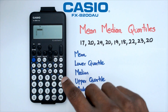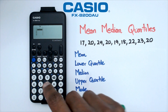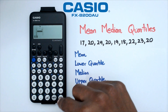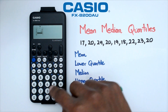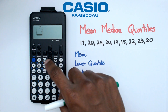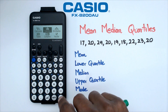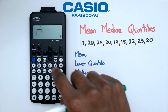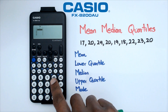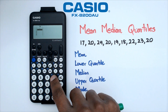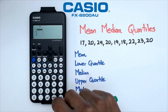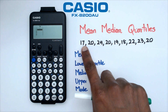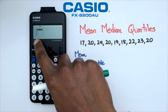Sometimes what it does is pop up asking if you'd like to delete the previous data. For example, if there were some other numbers already entered and we go back into stat mode and select one variable, it may not prompt you. But what we can do is just click on the delete button and it should delete all of your previous data.